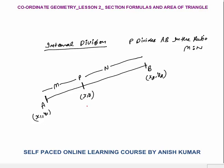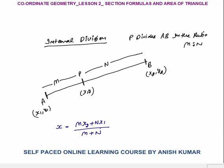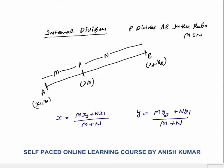The value of the X coordinate would be MX₂ plus NX₁ divided by M plus N. You need to learn this formula because derivation will take time and in the exam you straight away have to remember this: X = (MX₂ + NX₁) / (M + N). The Y coordinate would be equal to (MY₂ + NY₁) / (M + N).